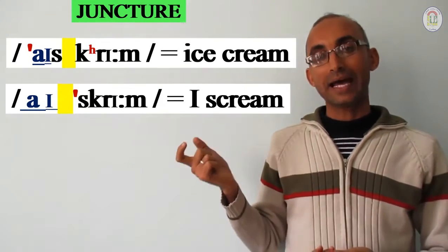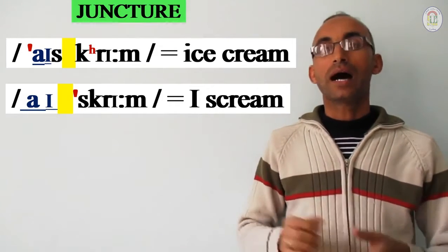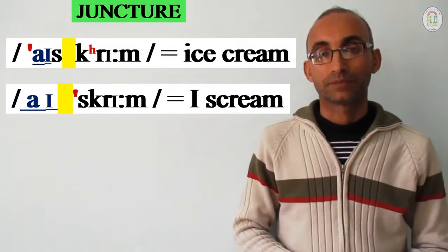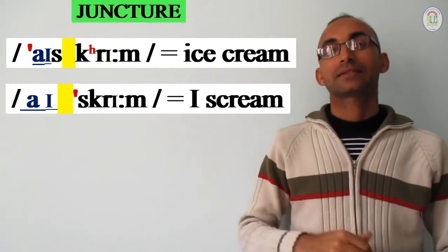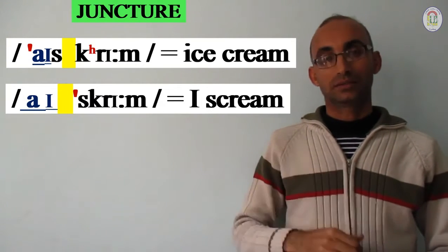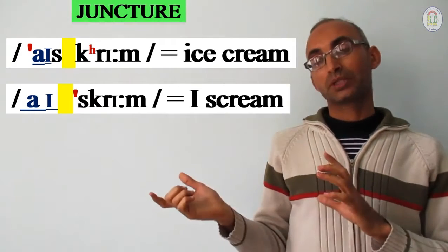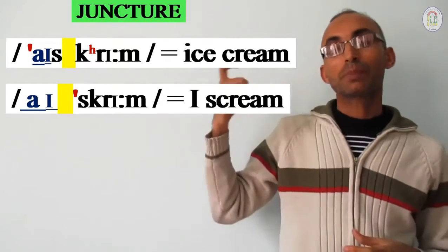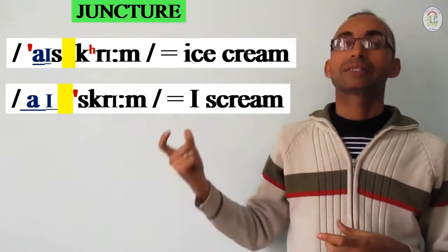Also, the 'k' sound in 'cream' is aspirated. So in 'ice cream,' the 'i' is shorter and the 'k' in cream is aspirated. In the second utterance, 'I scream,' the diphthong 'I' is longer. And also comparing the two: in the compound noun, the first part receives the primary stress — it means 'ice' is stressed.